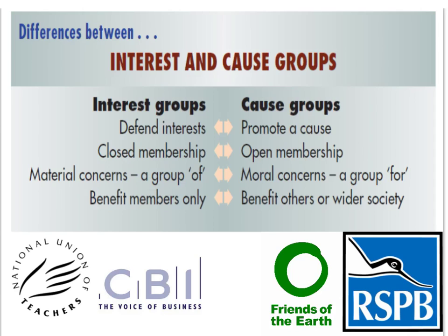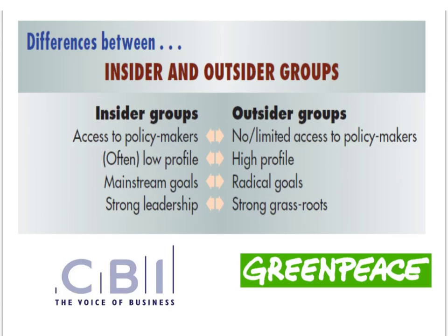Groups like Friends of the Earth and the RSPB promote the issues of environmentalism and conservation. Another really important distinction is between insider and outsider groups, which is all about how close pressure groups are to the government. Insider groups have regular access and are in constant dialogue with the government — the CBI, for example, has the ear of the government. Outsider groups, in contrast, don't have that kind of access. A group like Greenpeace, because its goals and tactics are perceived as more radical, is one the government prefers to maintain its distance from.